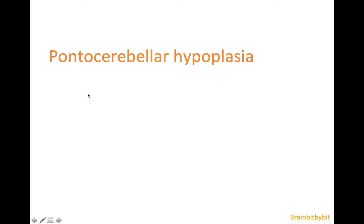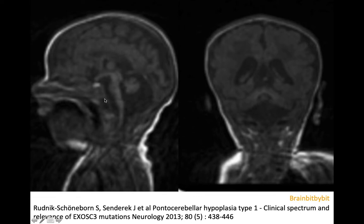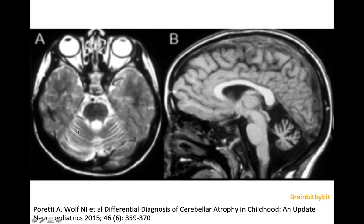Continuing with pantocerebellar hypoplasia in brain bit by bit, I would like to spend a few minutes on the embryology of the posterior fossa, because this helps understanding pantocerebellar hypoplasia and cystic malformations of the posterior fossa. And if you have a single MR examination with a small cerebellum, it is impossible to tell whether it is hypoplasia or atrophy of the cerebellar hemispheres.